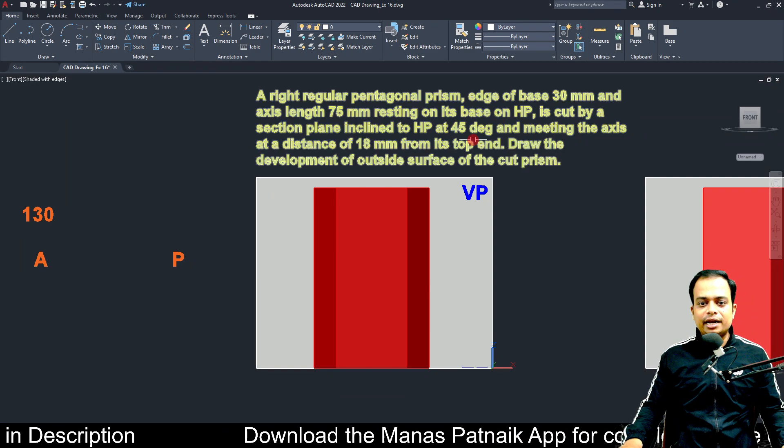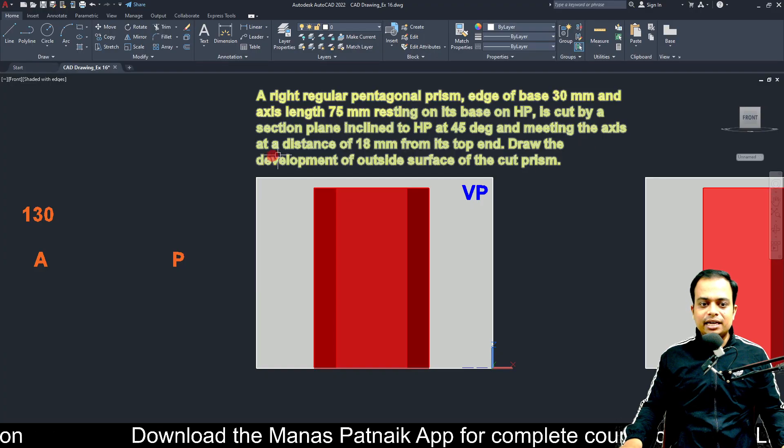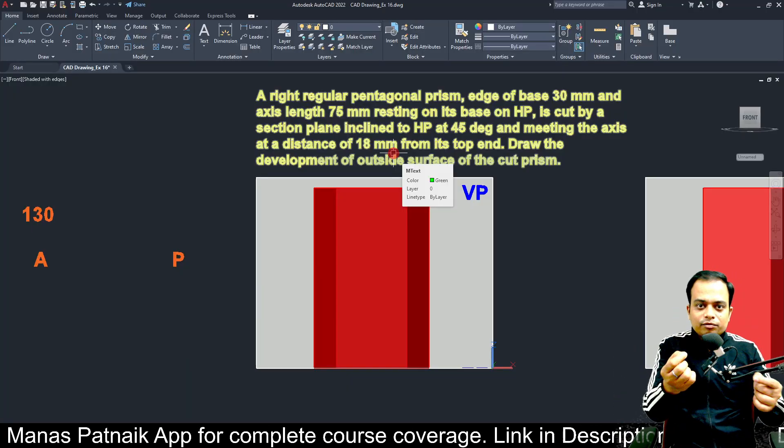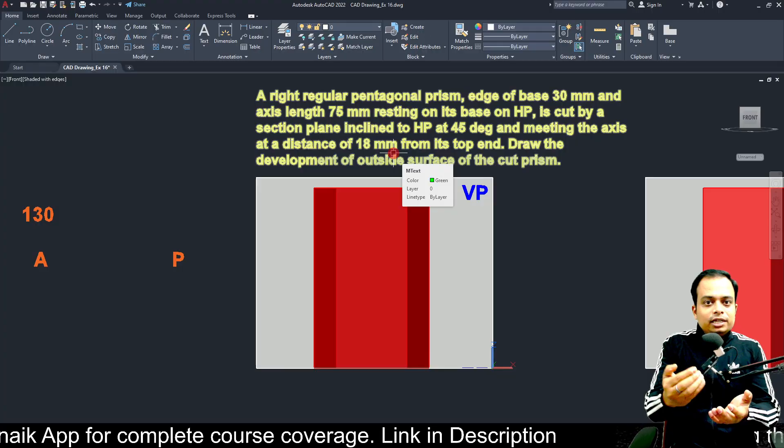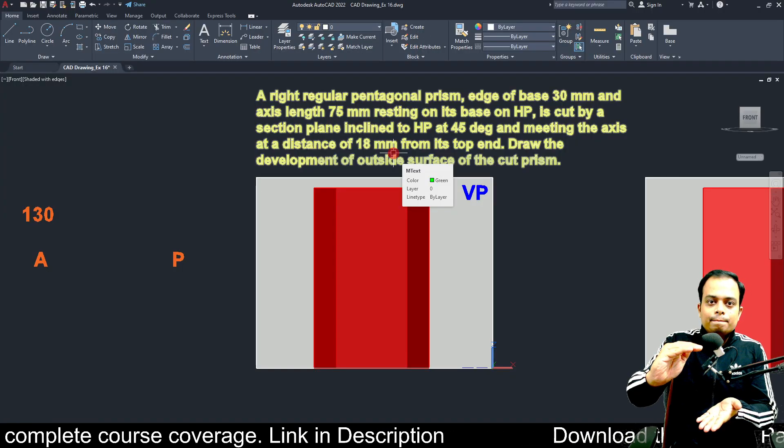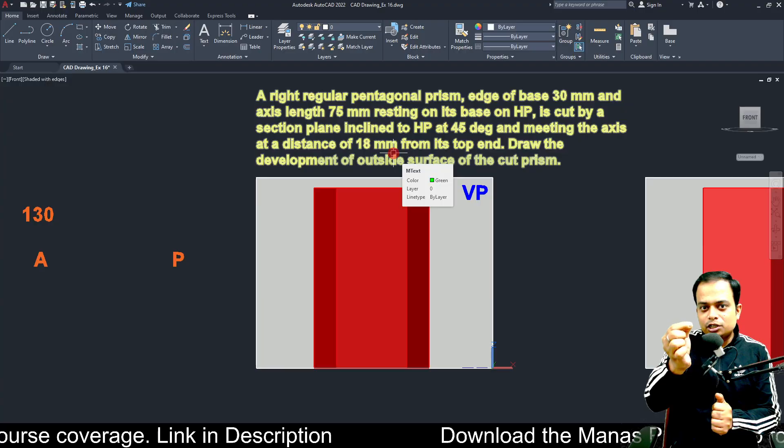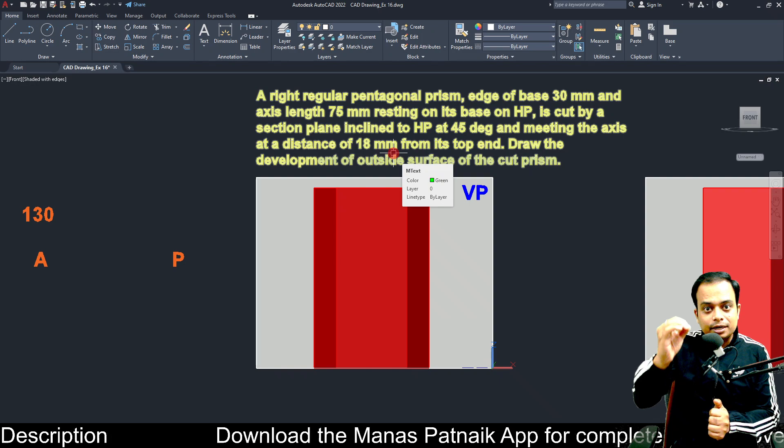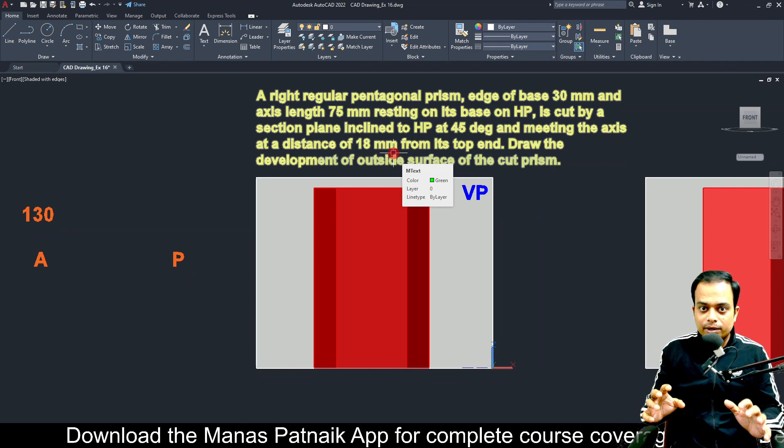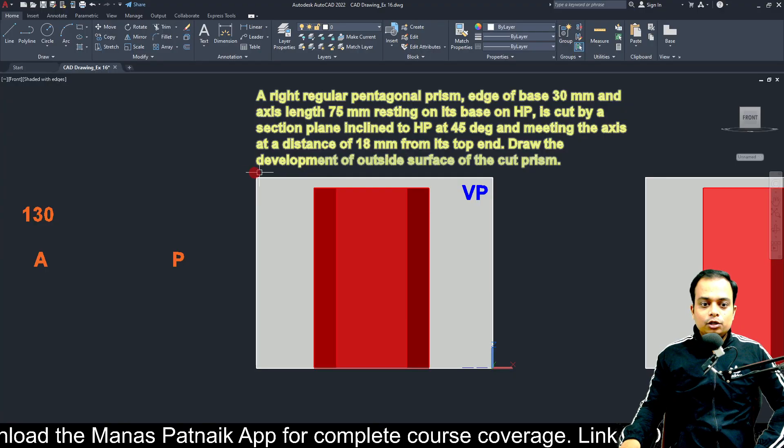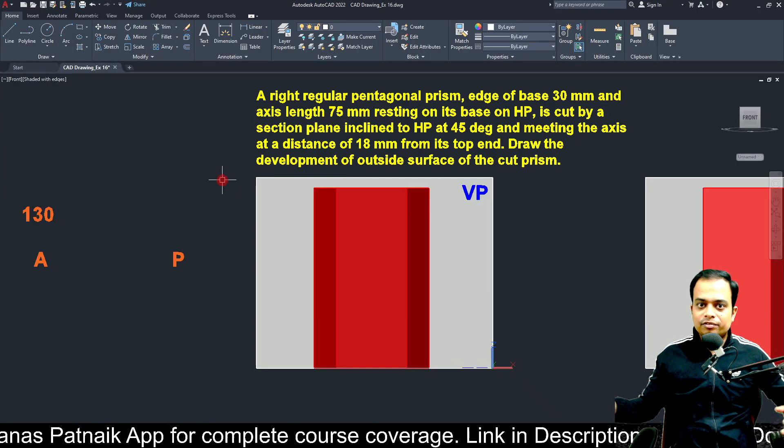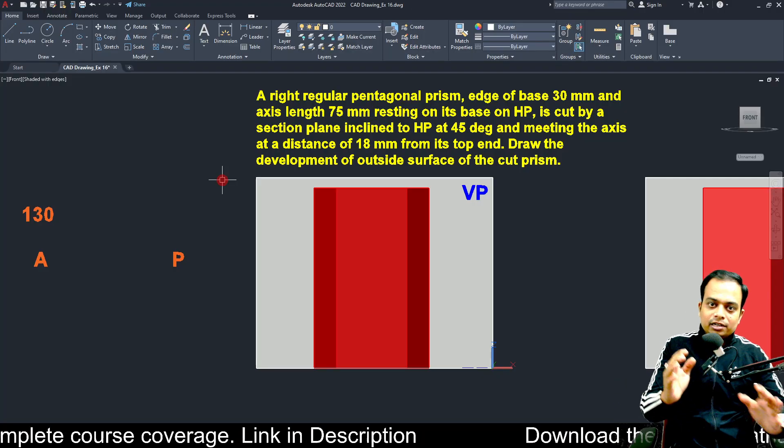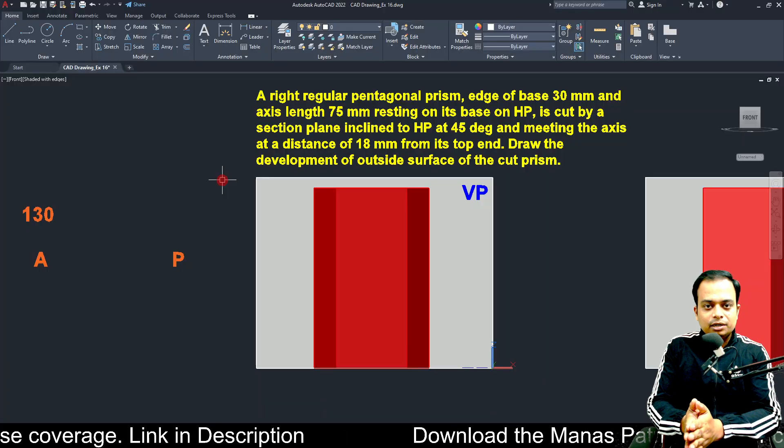Now, it is cut by a section plane inclined at 45 degree to the HP and meeting the axis at a distance of 18 mm from the top end. In most of the problems that we have done so far, the location of the cutting plane is usually given with respect to the bottom most part. However, in this problem, the location of the cutting plane has been given with respect to the top most end. It is 18 millimeters below the top end. You just need to make the development of the outer surface.